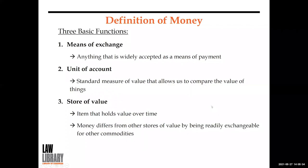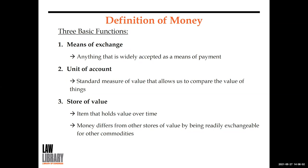Let's talk about some general definitions. What is money? Money is defined by its functions. Money has three basic functions: first, it's a means of exchange — anything widely accepted as a means of payment; second, it's a unit of account — a standard measure of value that allows us to compare the value of things; third, it's a store of value — an item that holds value over time. Money differs from other stores of value because it's readily exchangeable for other commodities.